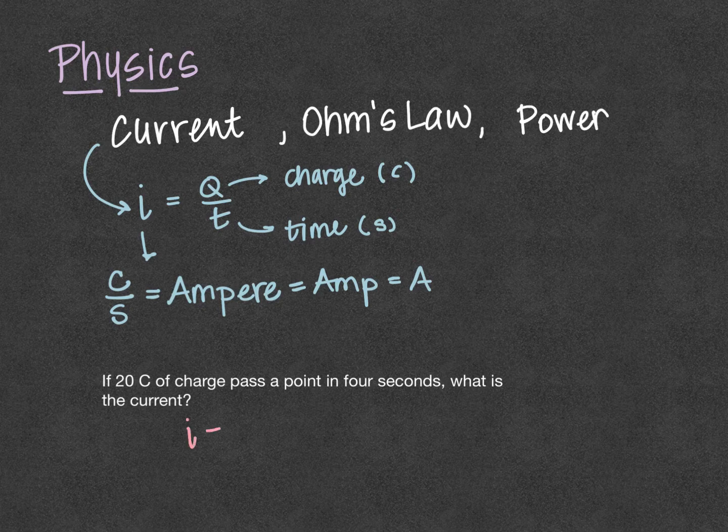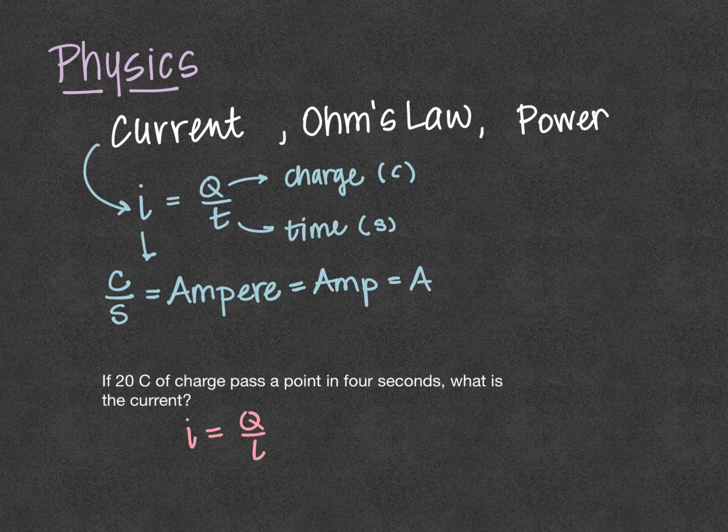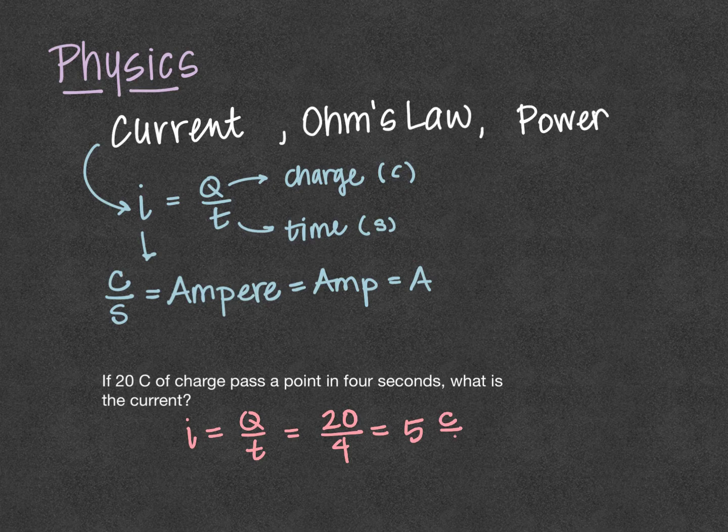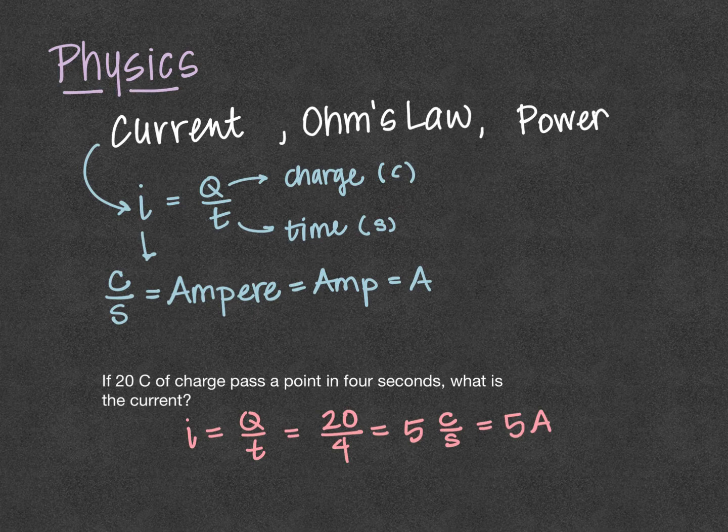Well, current is charge per time. Our charge is 20 coulombs in four seconds, which would give us five coulombs per second, or five amps. I'm going to use a capital A for the amp.